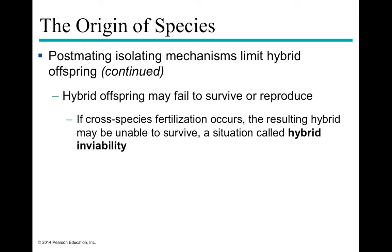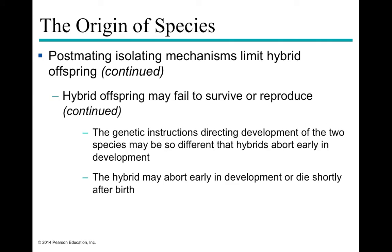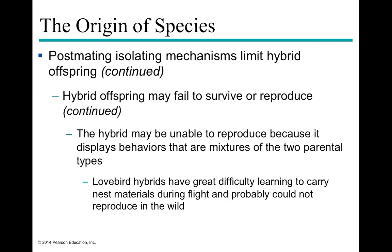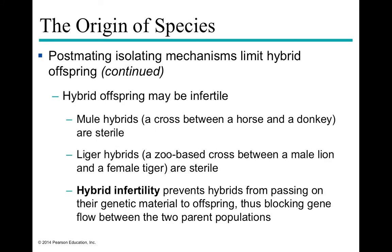If fertilization does occur between incompatible species, it often leads to hybrid inviability — the hybrid will not come to term, or if it does, will not survive to reproductive age. If the hybrid does survive, it is generally infertile. A mule — a cross between a horse and a donkey — or a liger — a cross between a lion and a tiger — survive to adulthood but are infertile. Only a male lion and female tiger combination produces a liger; the reverse does not work.